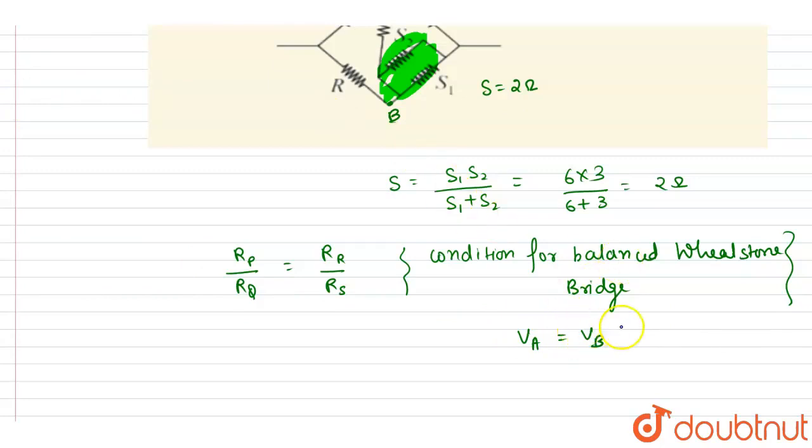You can check this also by solving the potential across A and the potential at B. You'll get the same potential for a balanced Wheatstone bridge. Now if you see here...